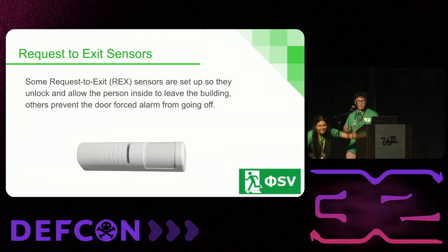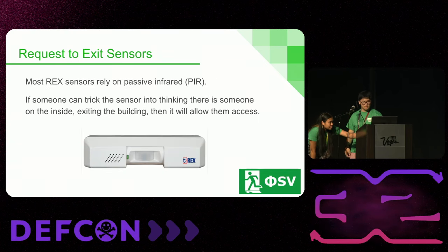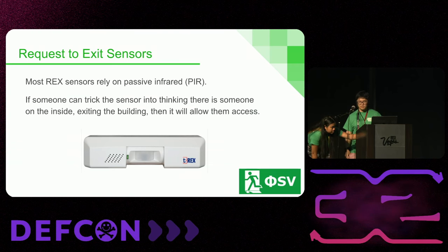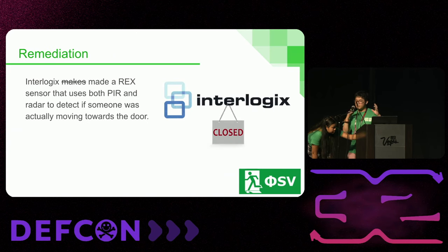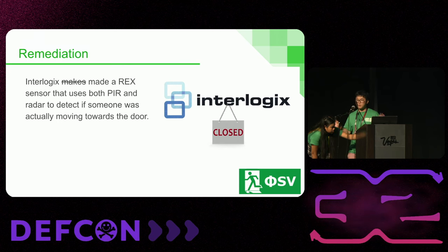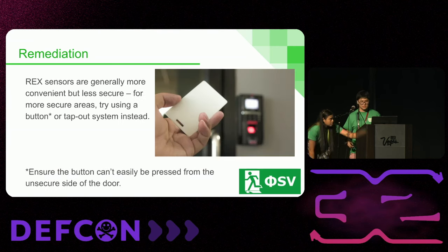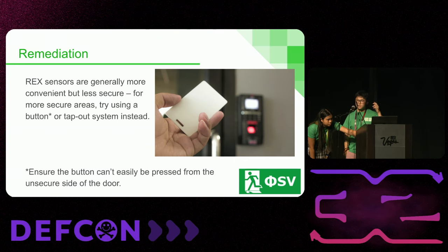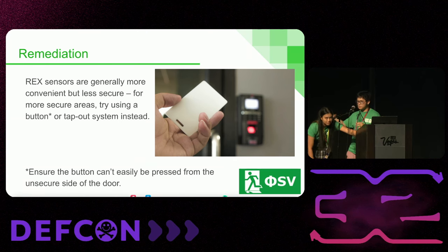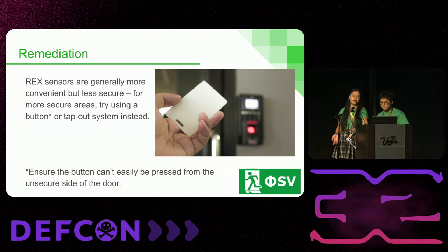Request-to-exit sensors are set up so you can unlock when coming from inside the building. Most of them rely on passive infrared. If someone can trick the sensor into thinking there's someone on the inside exiting, it will allow them access. There are sensors that use both PIR and radar to detect if someone is coming in — there used to be a company called Interlogix which made a REX sensor; they no longer exist, but other companies offer similar products, though they can be many thousands of dollars. REX sensors are generally more convenient but less secure. For more secure areas, there are REX buttons — make sure to put them away from doors so people can't use wire to push them from outside. Tap-in, tap-out is the most secure way to let people in and out of spaces, but you're trading convenience for security.